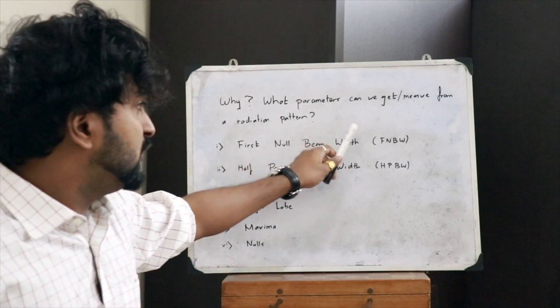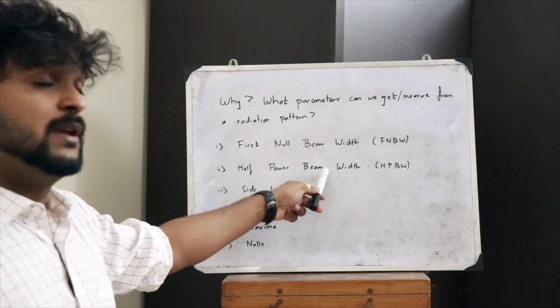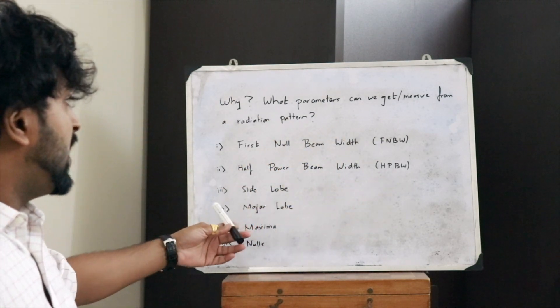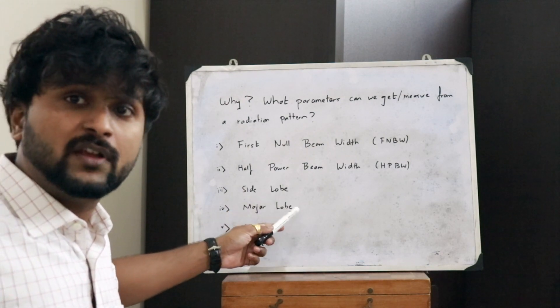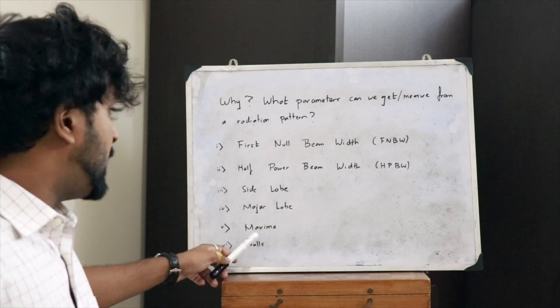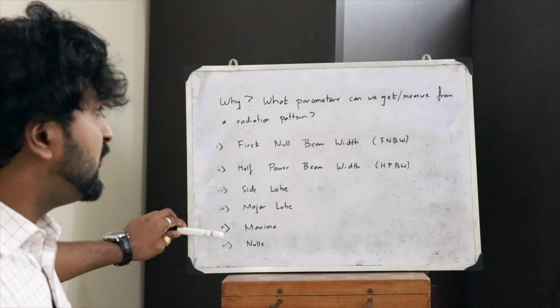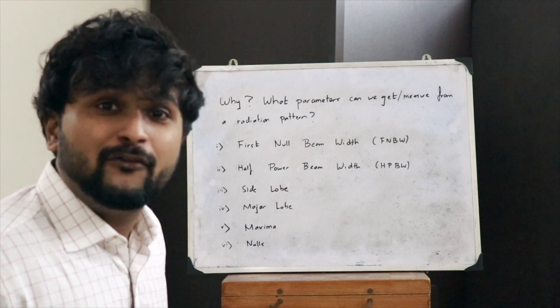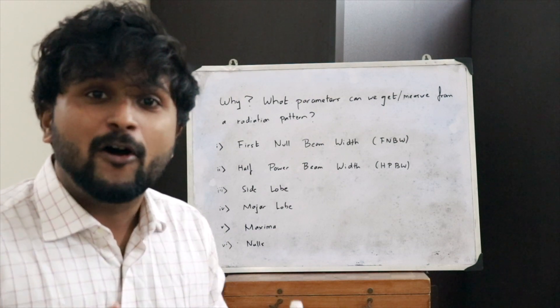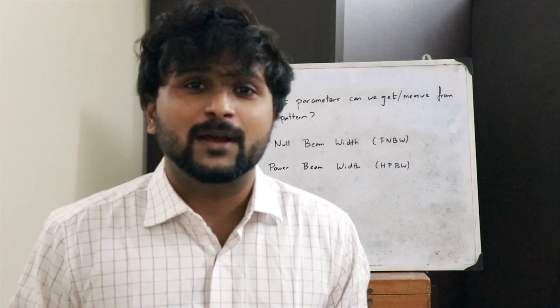The next question is: why do we need radiation patterns? The radiation pattern of an antenna is measured so that we can extract several parameters. These include the first null beam width (FNBW), the half power beam width (HPBW), information about the side lobes, the major lobes, the maxima, and the nulls. All these parameters can be found by measuring the radiation pattern of a particular antenna.